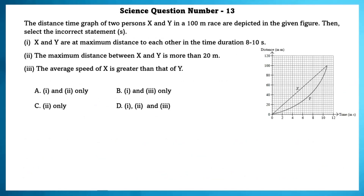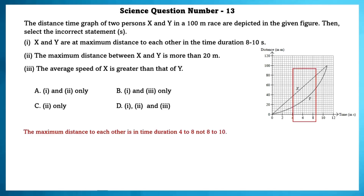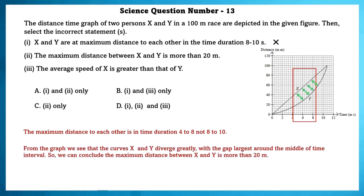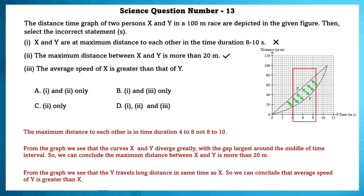Science question number 13. The distance-time graph of two persons X and Y in a 100-meter race are depicted. Select the incorrect statements. First: X and Y are at maximum distance to each other during time 8 to 10 — false, the maximum distance is during time 4 to 8, not 8 to 10. Second: the maximum distance between X and Y is more than 20 meters — from the graph, the curves diverge greatly, so this is true. Third: the average speed of X is greater than that of Y — from the graph, Y travels a longer distance in the same time, so average speed of Y is greater than X. So this statement is wrong.